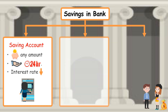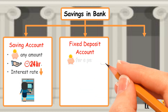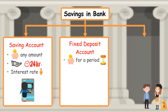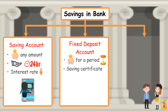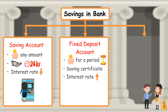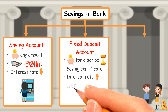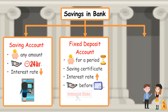Number two, fixed deposit account. This is to save your money for a period of time, like one month, three months, nine months, one year, two years and so on. A savings certificate will be issued. Moreover, it has a higher interest rate than a savings account. However, if you withdraw before the maturity date, your interest will be reduced.